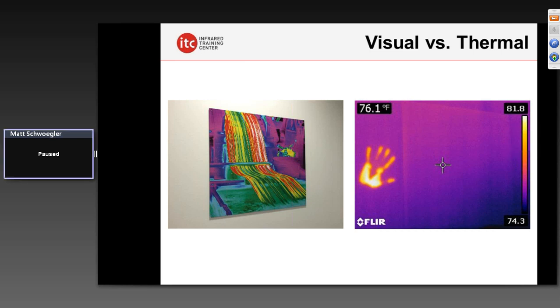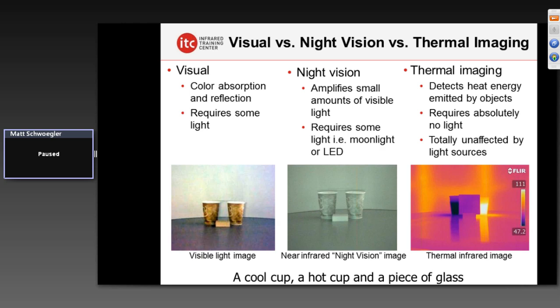That's a quick demonstration of the difference between the visible world and the thermal world, something I thought was very interesting. Often infrared is confused with night vision — people think they're the same thing. There's actually a distinct difference. Infrared or thermal imaging detects the heat emitted by objects, completely unaffected by light sources and requiring no visible light to operate whatsoever.